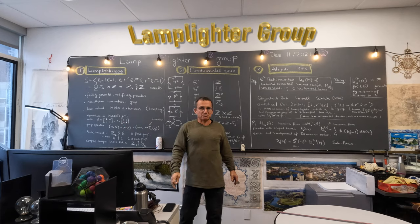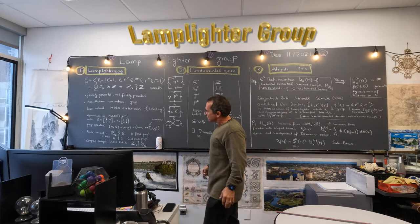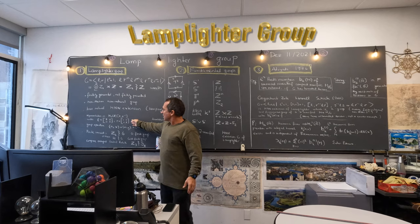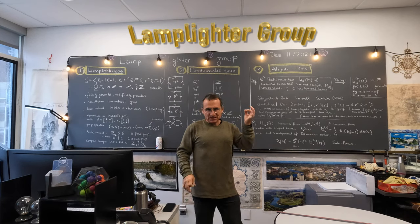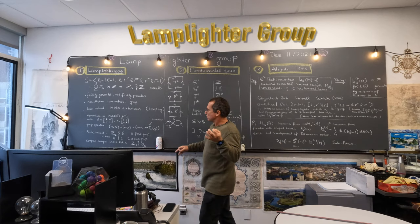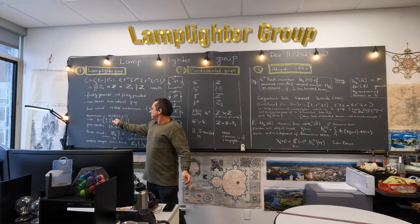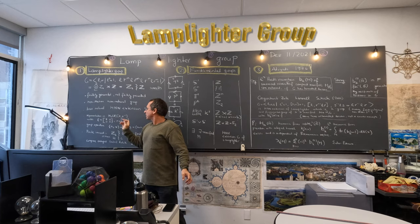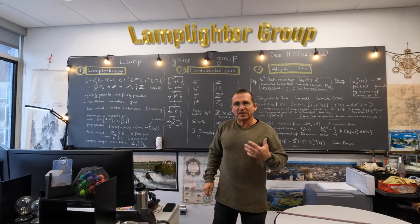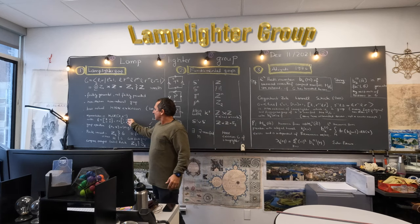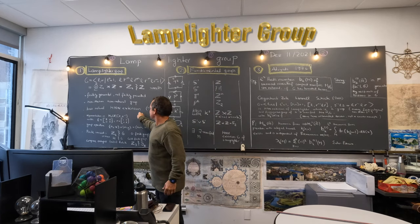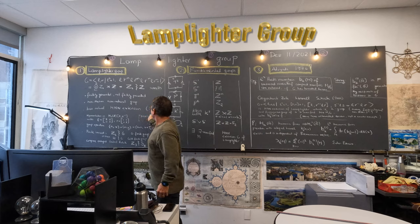There's a nice representation of this group in matrices. You have the shear and also the entity with T. When you invert it, you get T minus one. When you look at the multiplicative group generated by these matrices, the general element is a polynomial in T and T minus one, with N and zero one as a polynomial in Z[T, T⁻¹].